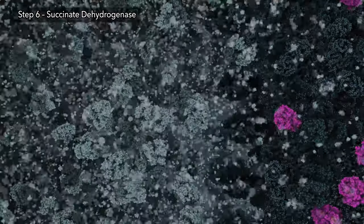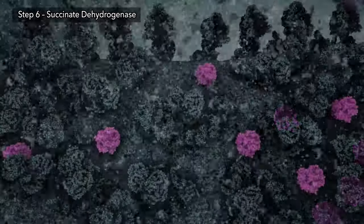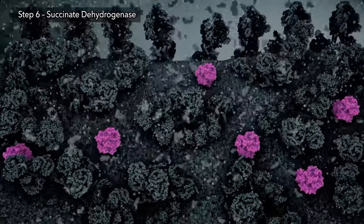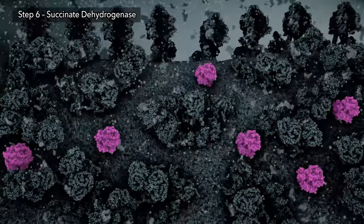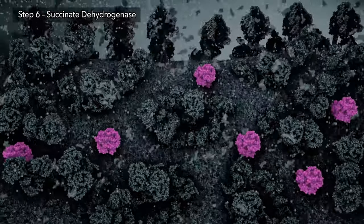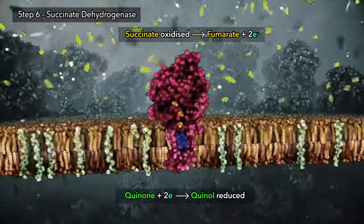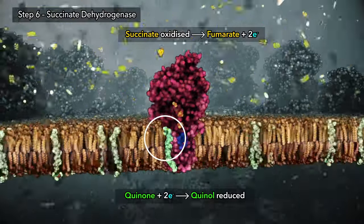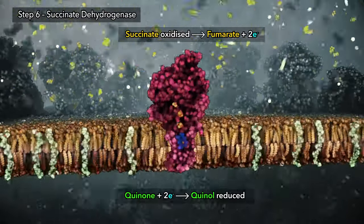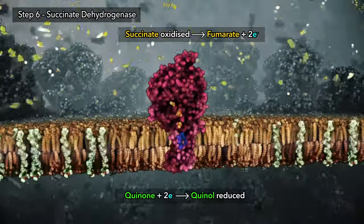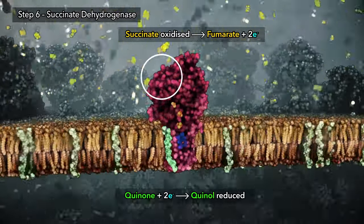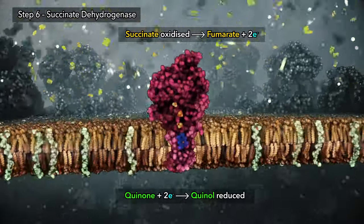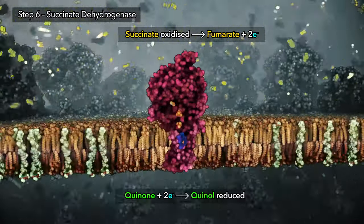Step six is performed by an enzyme embedded in the inner mitochondrial membrane. This enzyme is also known as complex II of the electron transport chain. The enzyme catalyzes the oxidation of succinate to create fumarate, releasing two electrons that hop through the interior to coenzyme Q, which is reduced. Coenzyme Q travels in the membrane carrying the electrons to nearby enzymes of the electron transport chain.